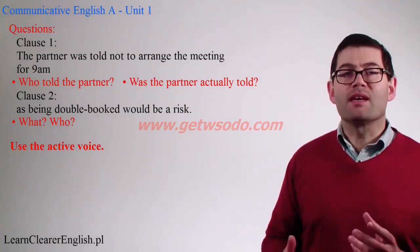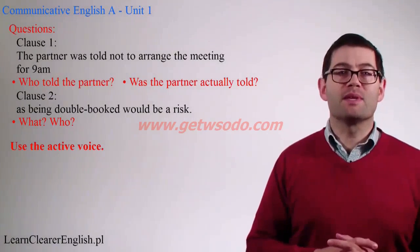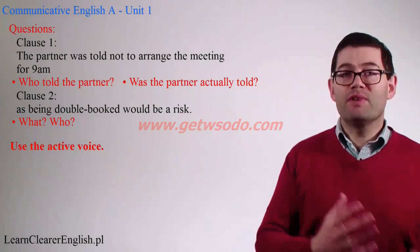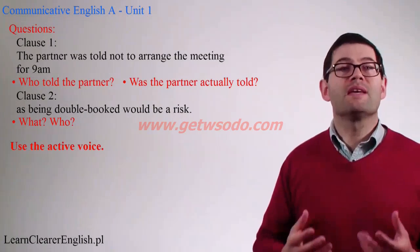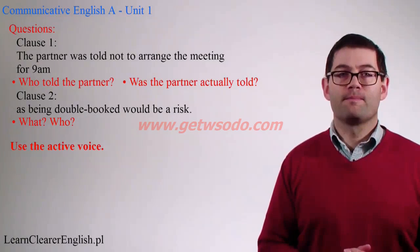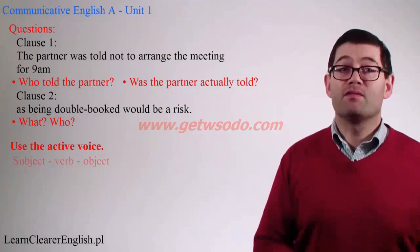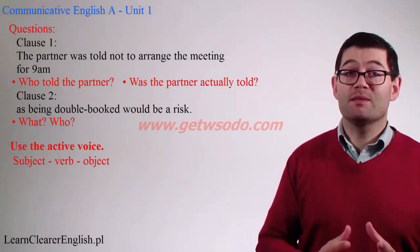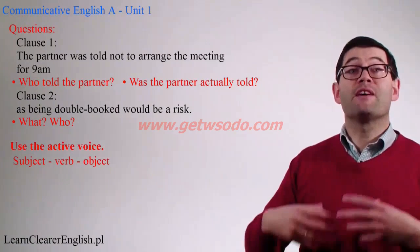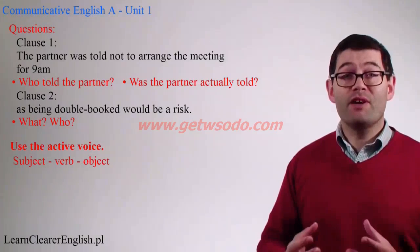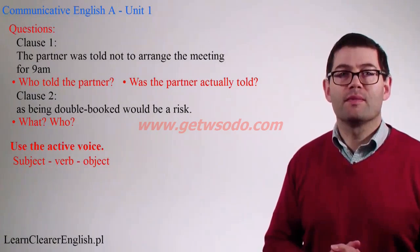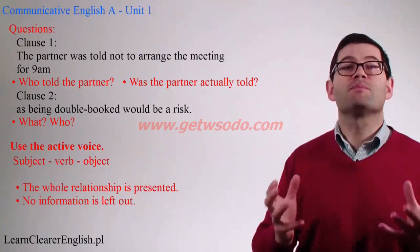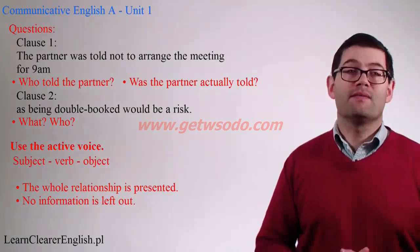Generally speaking, if we consider the way that we would normally communicate a message, this is back to front. And, as we've seen already, the person doing the verb or action may not be identified. Let's consider the active voice: subject, verb, object — that is, the person or thing that is doing something, the verb or what they are doing, and then finally who or what is being affected. From the point of view of clear communication, the whole relationship is presented. No information is left out.